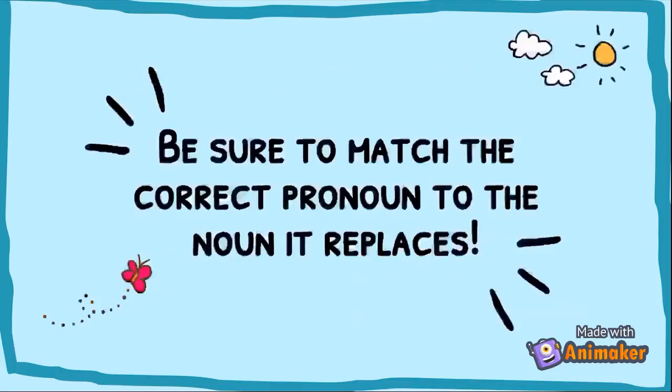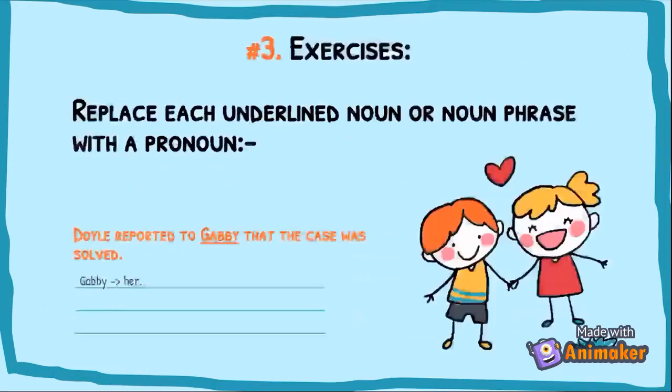Exercise — replace each underlined noun or noun phrase with a pronoun. Doyle reported to Gabby that the case was solved. Gabby is one person and she's a girl, so it will be: her.